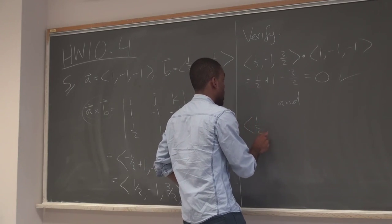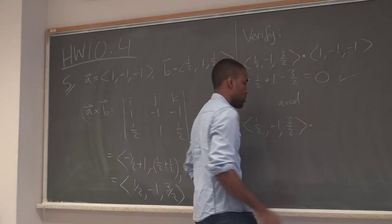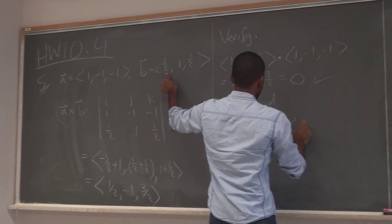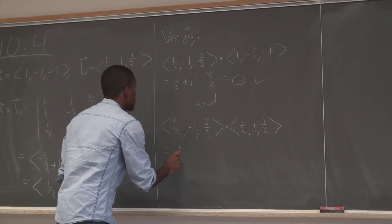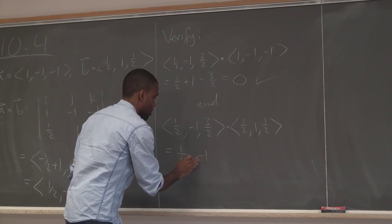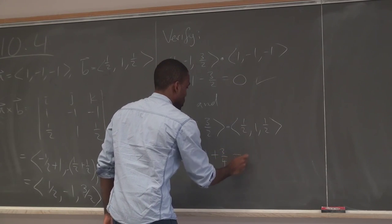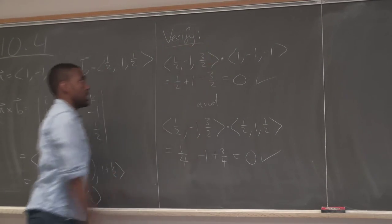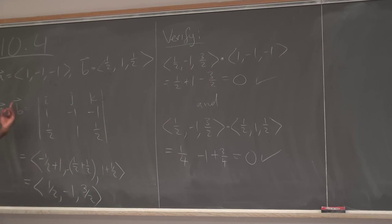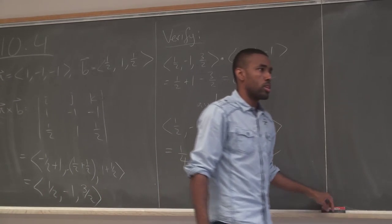So I also have to dot (1/2, -1, 3/2) with B = (1/2, 1, 1/2). That gives 1/4 minus 1 plus 2/4, which is zero. So that's the verification part. The cross product should be orthogonal to both vectors — if you dot product it with either one and don't get zero, you made a mistake somewhere.